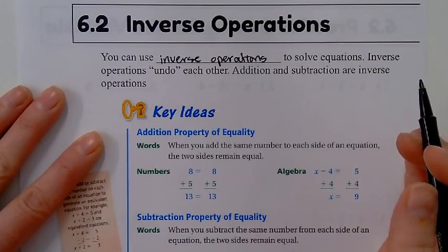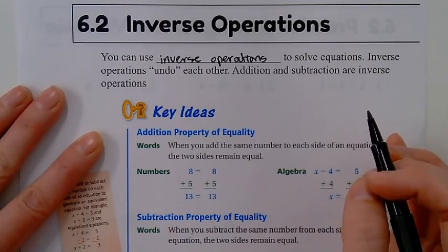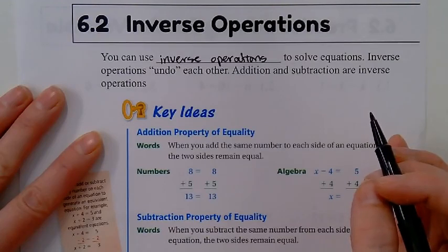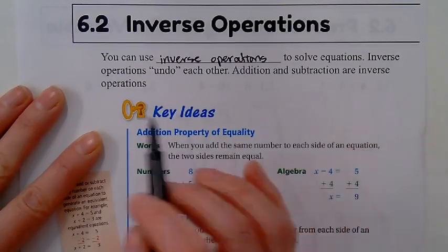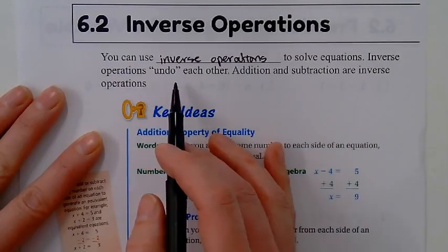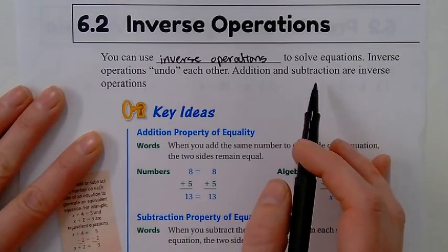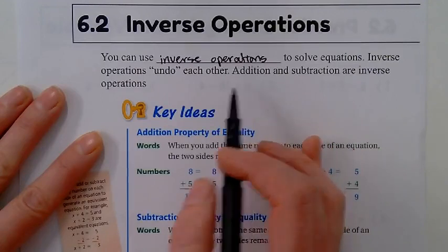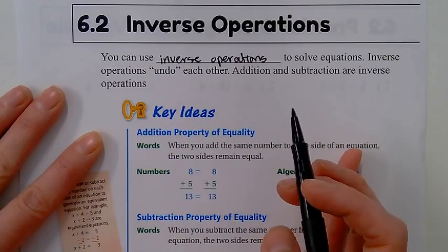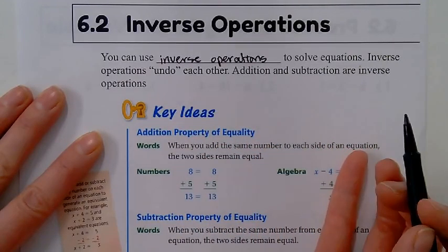Some of you guys have already been doing this and it's awesome, but we're just going to talk about why it works so that you can continue to use it correctly. Inverse operations basically undo each other. Addition undoes subtraction; subtraction will undo addition. They're opposites of each other. So if I add four and take away four, I still have zero, right?